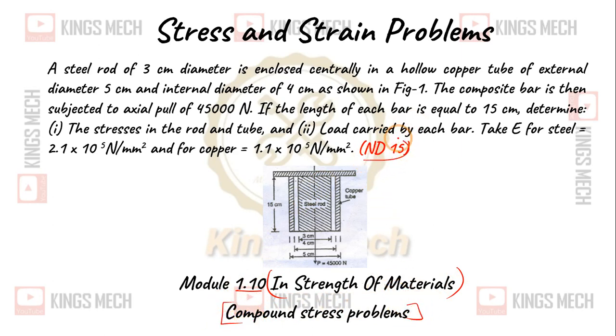This problem has been asked in Anna University November December 2015 under 2013 regulation. The question is, a steel rod 3 cm diameter is enclosed centrally in a hollow copper tube, external diameter DC 5 cm, internal diameter small DC 4 cm. The composite bar is subjected to an axial pull capital P of 45,000 N.